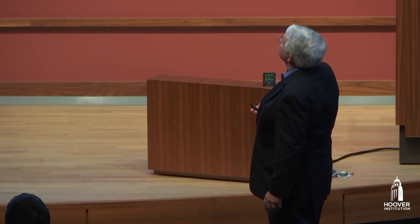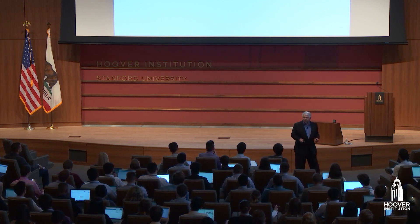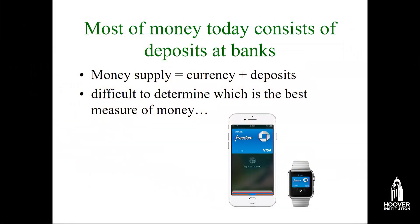Economists like to think of money in a more definitional sense. Which of the following would be money? Not a credit card. An iPhone — well, you can use it to make payments, but it's not part of your wealth used for transactions. A check is just a piece of paper, not really money. A 500 euro currency note? Yes, of course — it can be used for transaction purposes. A diamond ring? Rarely used for transactions. So the answer is D. This is why money is hard to measure, especially in the modern world.